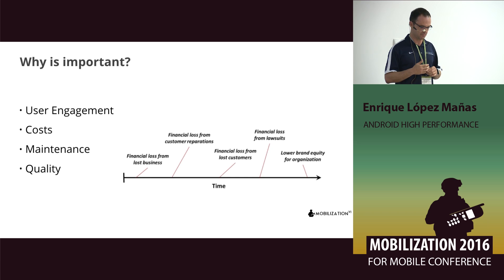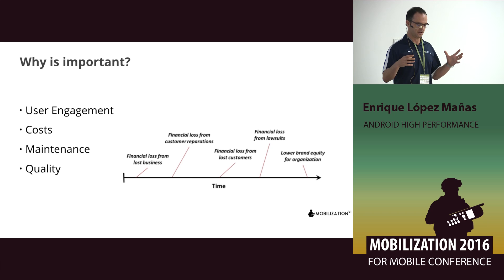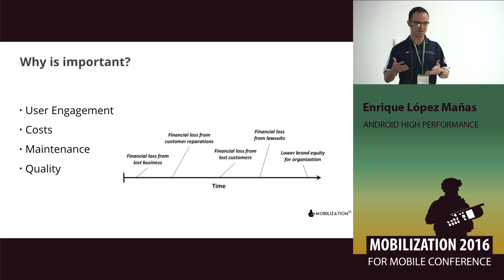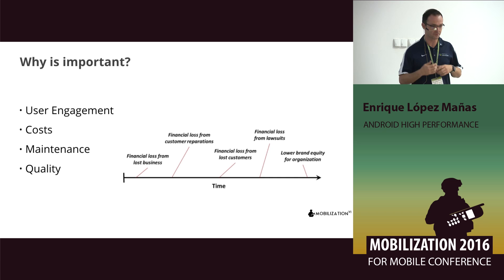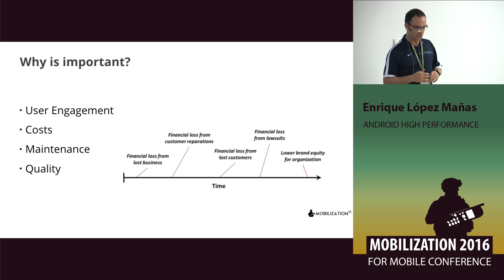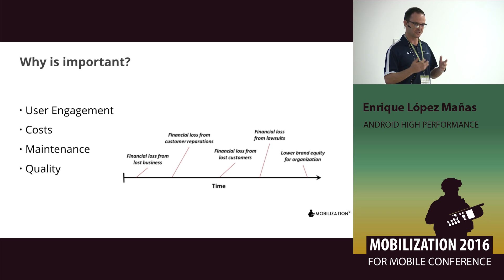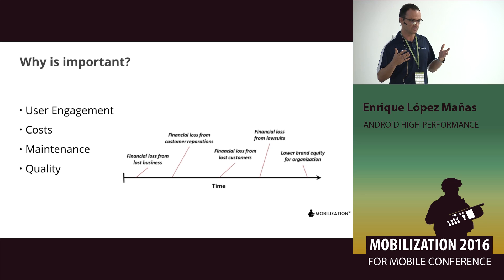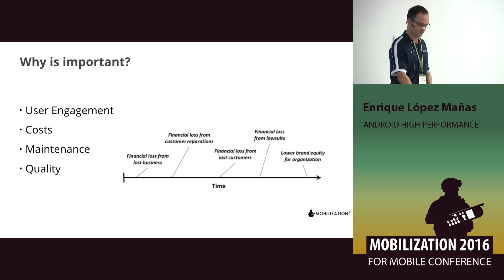We can have financial losses from lost business — when users aren't using our application because it's not performant. We can have losses from customer reparations; remember the case of Sony where people were entering the PlayStation Network, stealing data, selling it, or uploading passwords — you need to pay those users compensation. You can have losses from lost customers, from lawsuits — lawyers who try to get money from your mistakes. And of course if quality is not good, you'll have lower brand equity, and you want to avoid all those things.